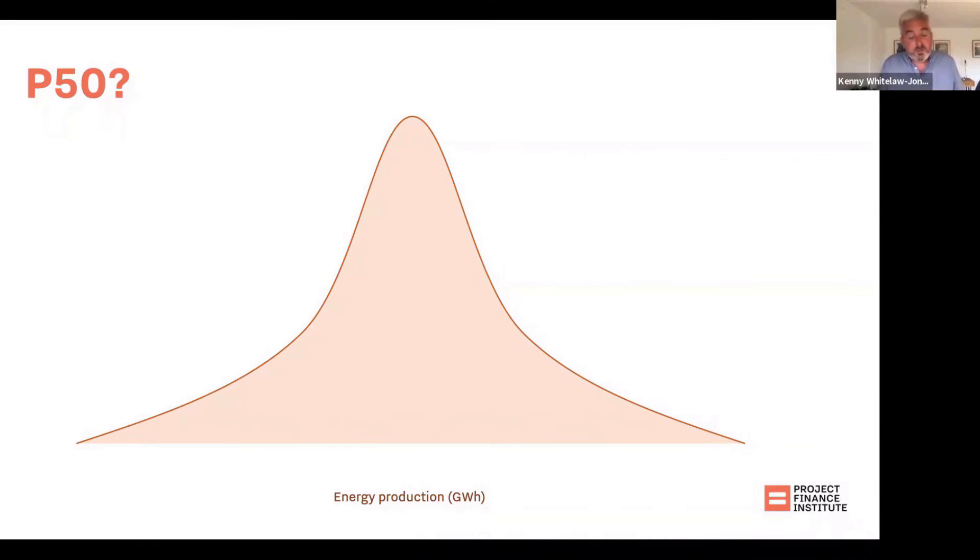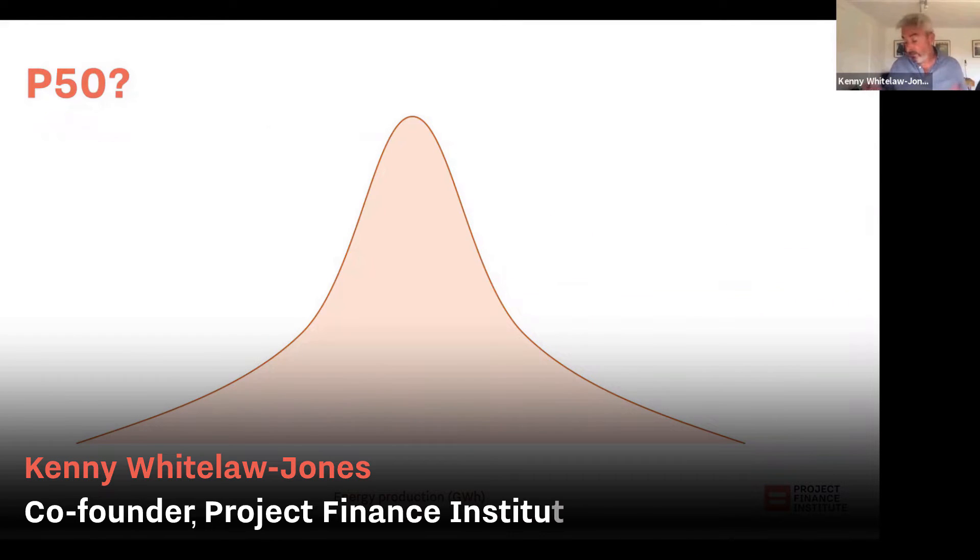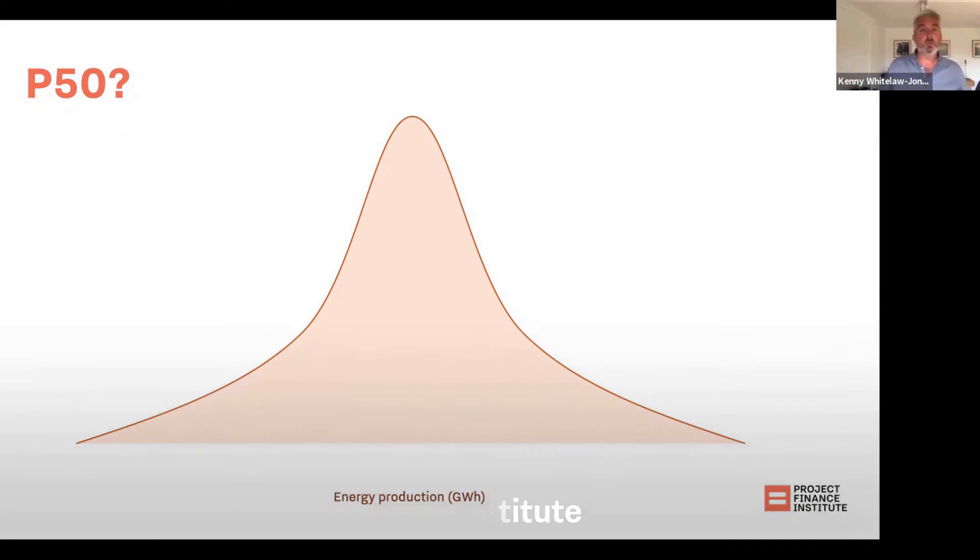We'll hear talk of P50, P90, and P75 when it comes to energy production in renewable energy projects. We know that with wind or solar, there's a good amount of uncertainty. The wind doesn't always blow, the sun doesn't always shine. And so what we end up with is a distribution of possible outcomes when it comes to energy production in any given period of time, let's call it a year.